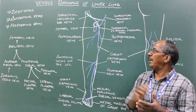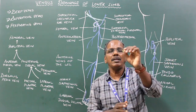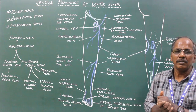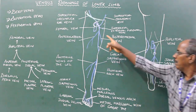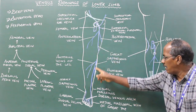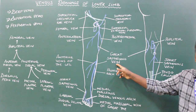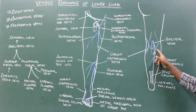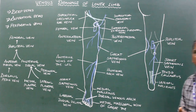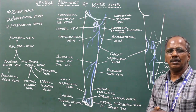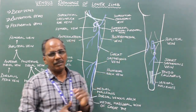Superficial veins. There are two major superficial veins which drain the lower limb. Number one: great saphenous vein. Number two: short saphenous vein, also called the small saphenous vein.